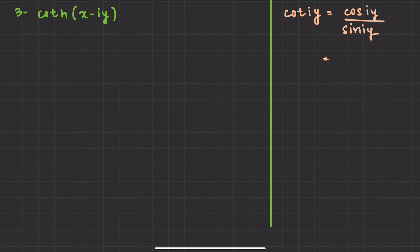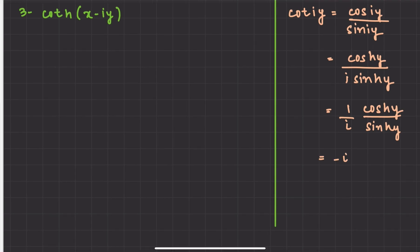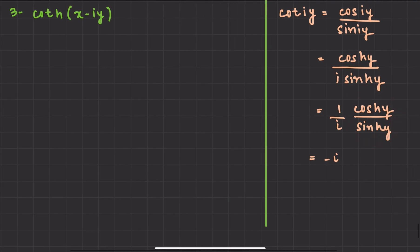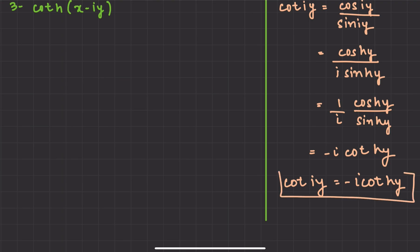If cot(iy) is given, it means cos(iy) divided by sin(iy). Now cos(iy) = cosh(y) and sin(iy) = i·sinh(y). So this becomes (1/i)·(cosh y / sinh y). We know 1/i = minus i. And cosh(y)/sinh(y) = coth(y). Therefore, cot(iy) = −i·coth(y). This is an important result.